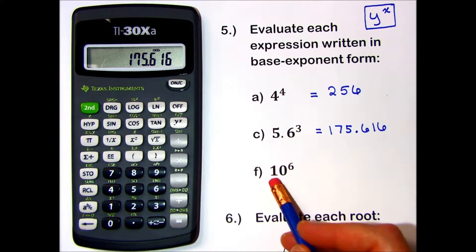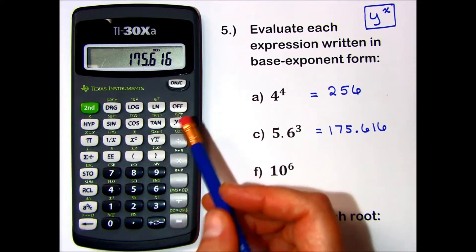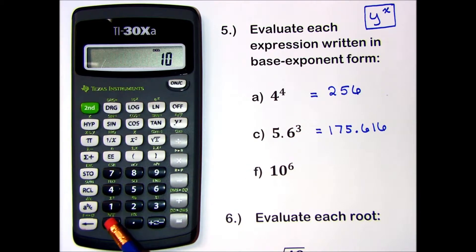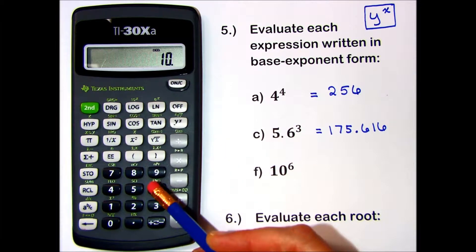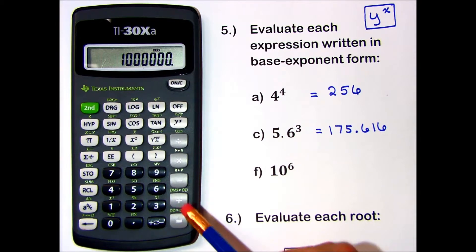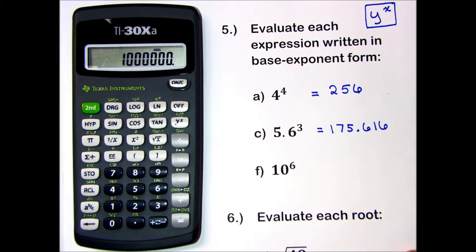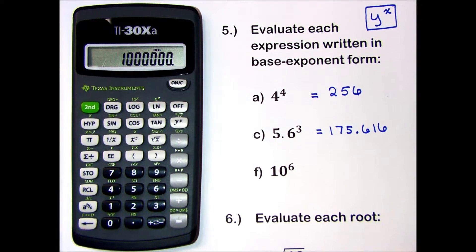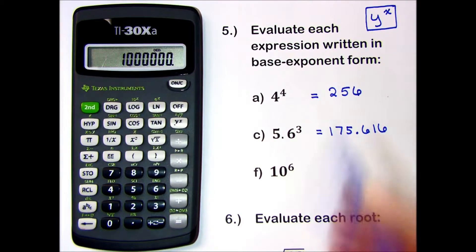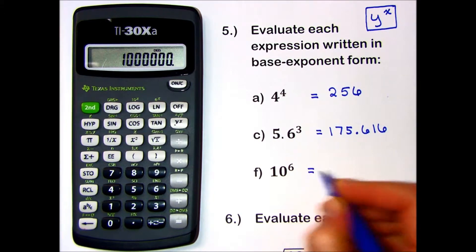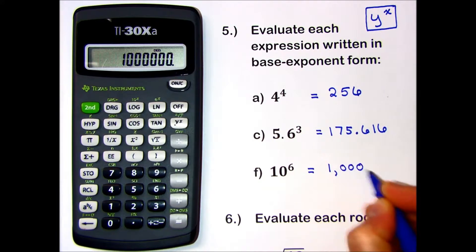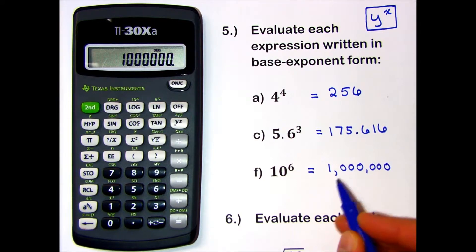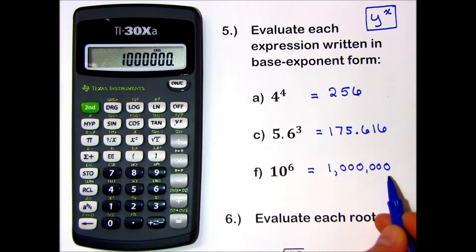And in part F, 10 to the 6th. I enter 10 to the power of 6. I see my answer is a 1 followed by 6 zeros. I'm going to write that with commas: 1, 2, 3, 4, 5, 6. And that value is 1,000,000.